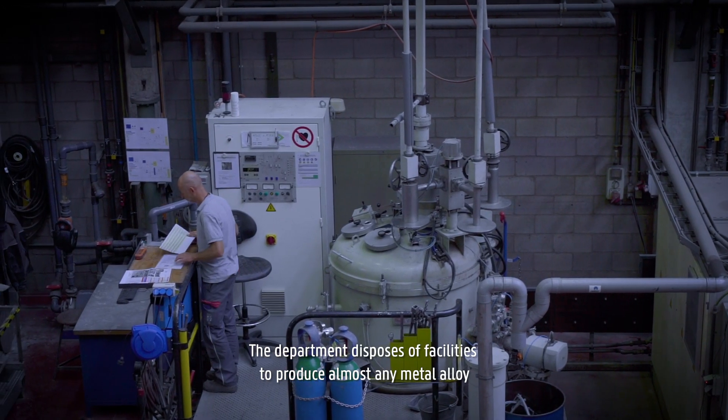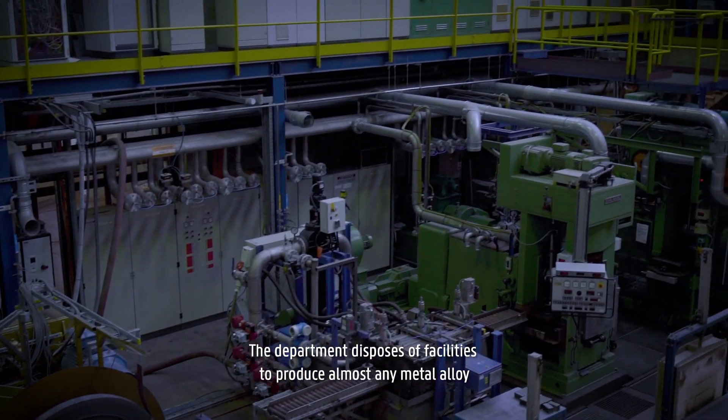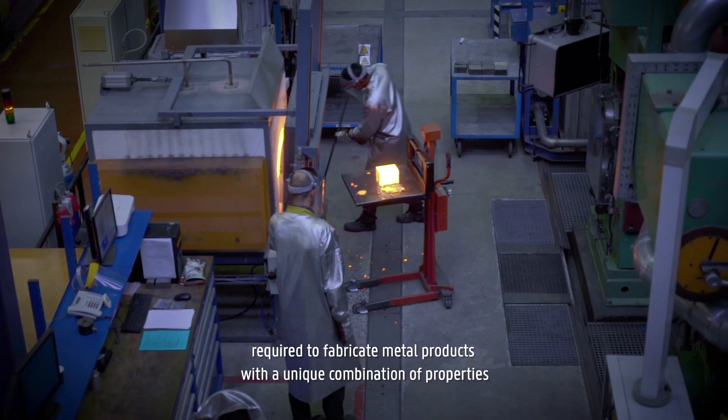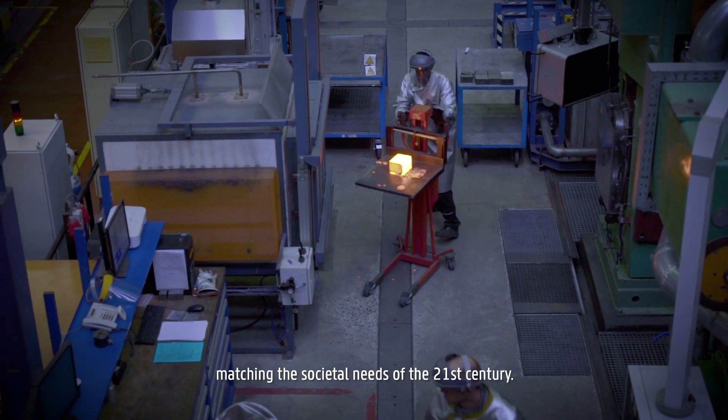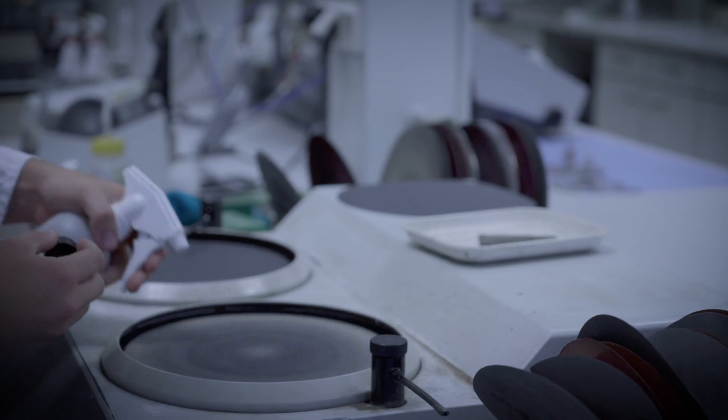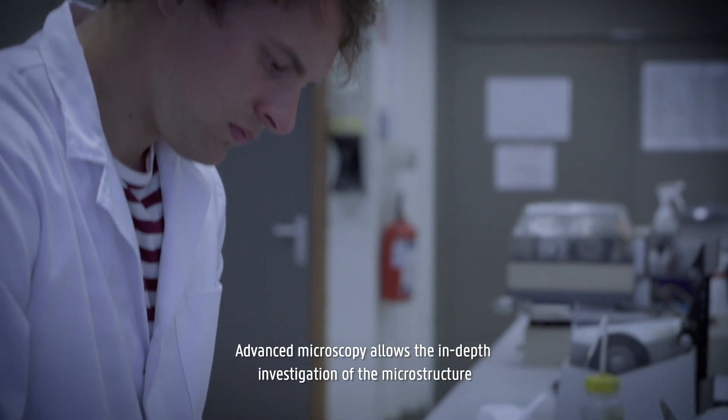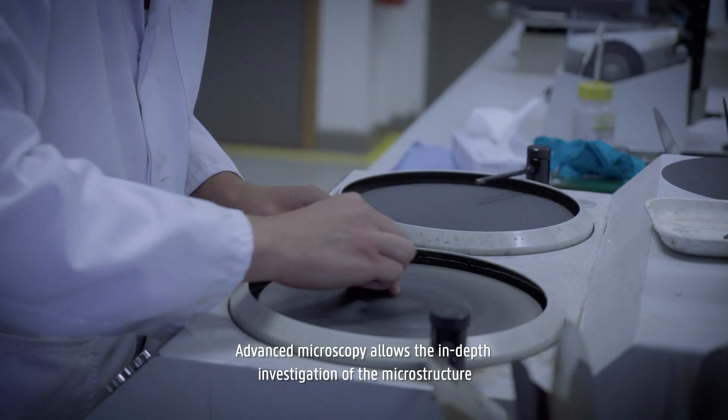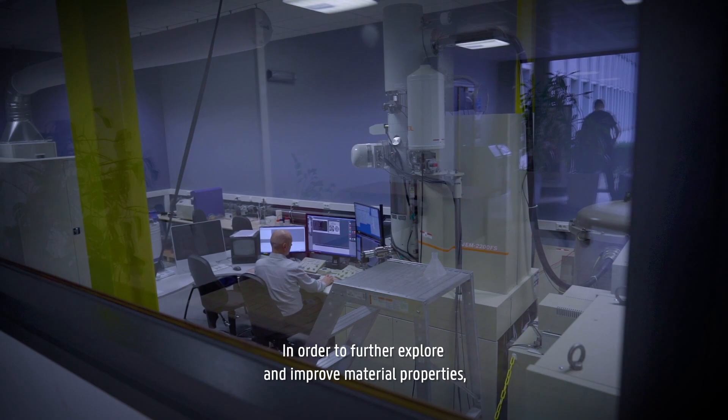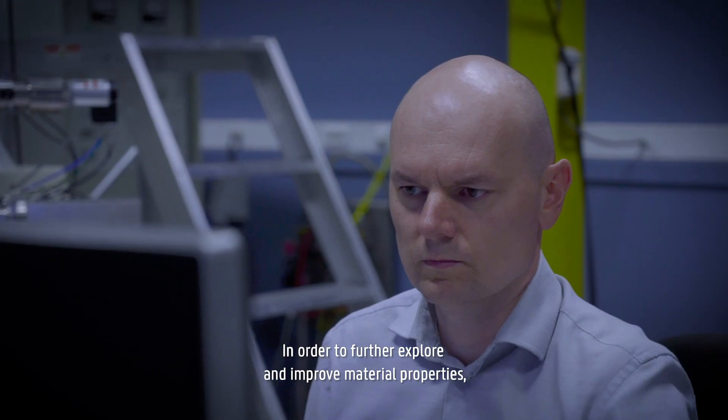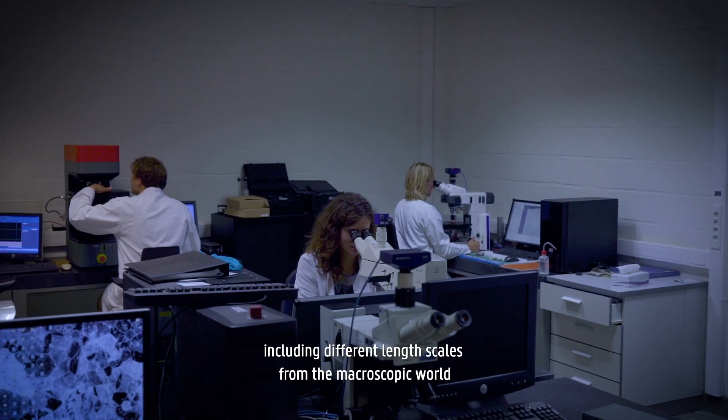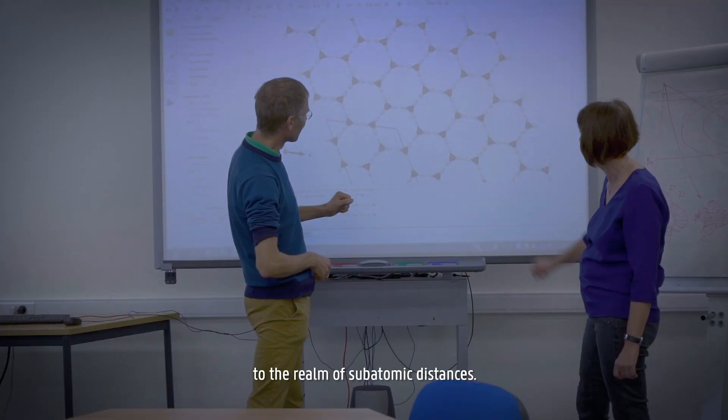The department disposes of facilities to produce almost any metal alloy, and to impose the thermal-mechanical treatments required to fabricate metal products, with a unique combination of properties matching the societal needs of the 21st century. Advanced microscopy allows the in-depth investigation of the microstructure, and to reveal the physical mechanisms underpinning the observed properties. In order to further explore and improve material properties, our researchers also make use of advanced models, including different length scales, from the macroscopic world to the realm of subatomic distances.